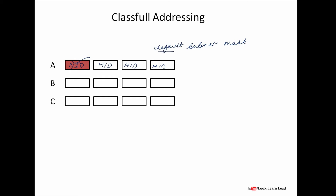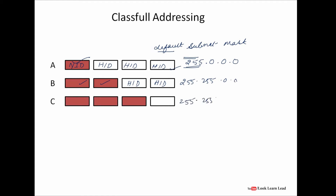There is a concept called subnet mask. We have a default subnet mask for all three classes. For Class A it is 255.0.0.0, because the number of bits in the net ID is 8 — all those bits are one. For Class B, the first 16 bits are net ID and the remaining are host ID, so the subnet mask is 255.255.0.0. Similarly, for Class C it is 255.255.255.0.